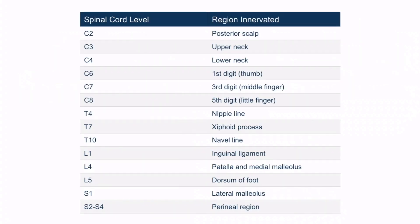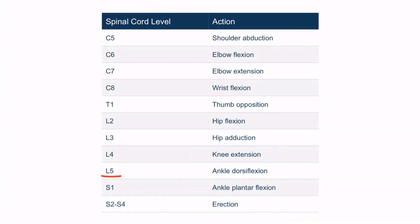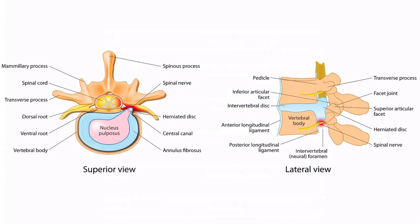From the dermatome table, recall that L5 is associated with the dorsum of the foot. From the myotome table, the L5 spinal cord level is associated with ankle dorsiflexion. If we look back at the anatomical image, if this were the L4 vertebra and this were the L5 vertebra, then the herniated disc here would compress the L5 nerve root — L4 would be the nerve root above, and L5 would be the one that's compressed.